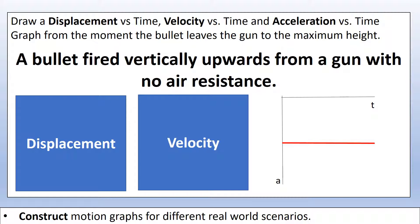That means the acceleration graph is constant and negative, because it acts in the opposite direction to the velocity. Now, if you have this acceleration graph, have a go at drawing the velocity and displacement graphs. From the acceleration graph, we know the acceleration is constant and negative, so the gradient of a velocity-time graph should also be constant and negative.